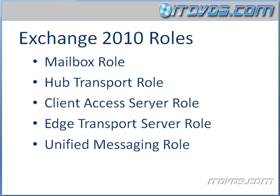The next role is the client access server role. This role manages access to your mailbox. There are a number of different ways to access a mailbox: we can use Outlook Web App, we can use ActiveSync to access our mailbox on our phone, or we can use Outlook. With Exchange 2010, Outlook actually contacts the client access server rather than the mailbox server directly, so it truly is the point of contact to access your mailbox.